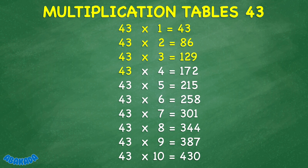43 times 4 equals 172. 43 times 5 equals 215. 43 times 6 equals 258. 43 times 7 equals 301. 43 times 8 equals 344. 43 times 9 equals 387.